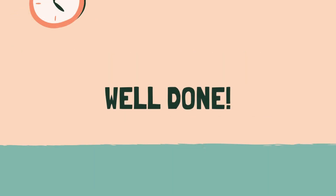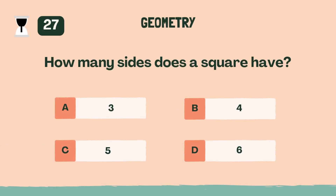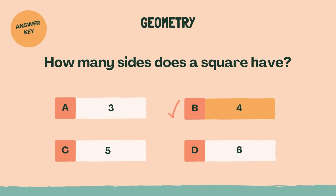Well done. Let's move on to the next category. Category 5: Geometry. How many sides does a square have? The answer is B, 4.